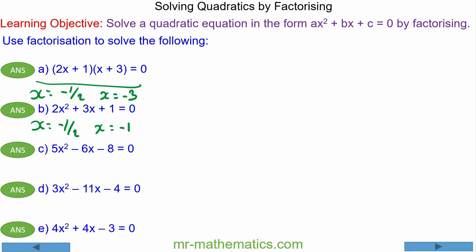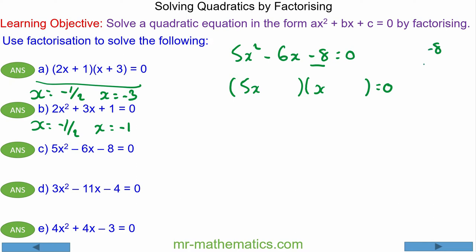For question c, 5x squared minus 6x minus 8 equals 0. We have two brackets with 5x in one and x in the other. Two numbers that multiply to make negative 8 could be: 1 and negative 8, 2 and negative 4, or negative 1 and positive 8, or negative 2 and positive 4.